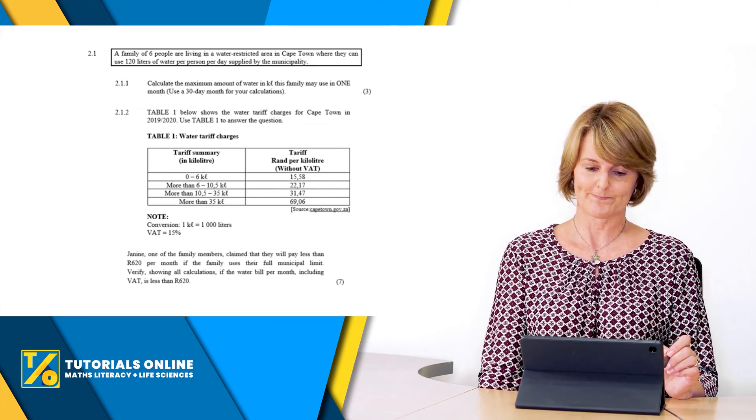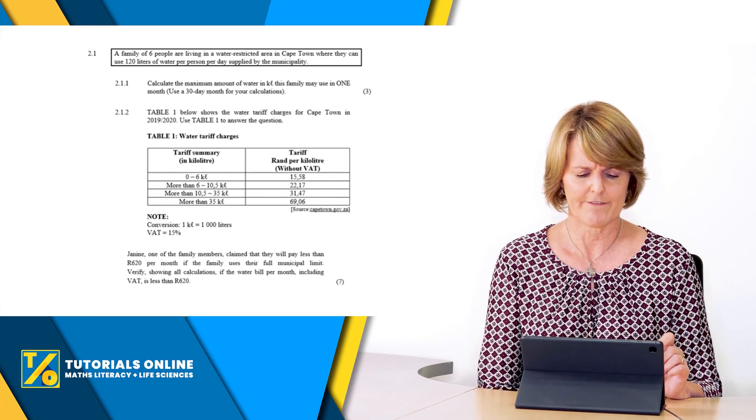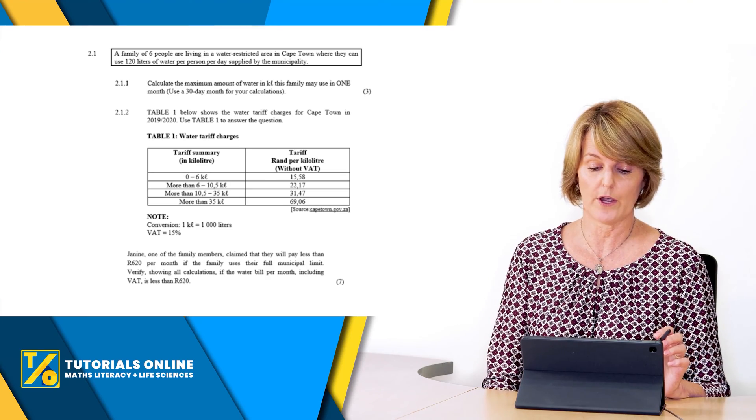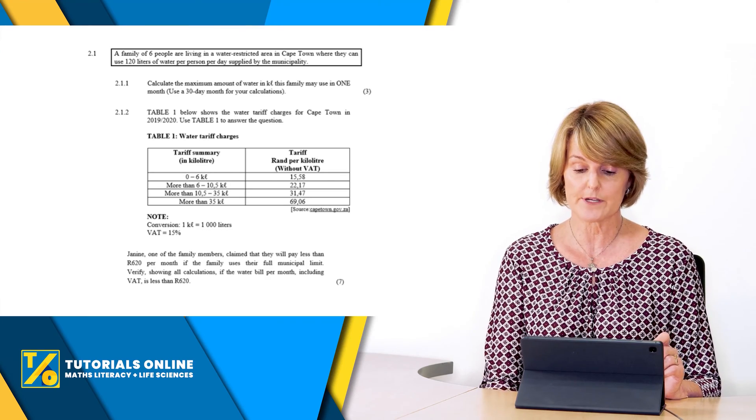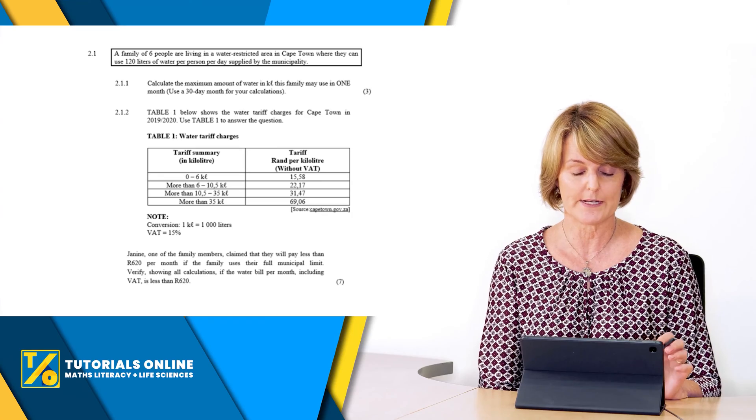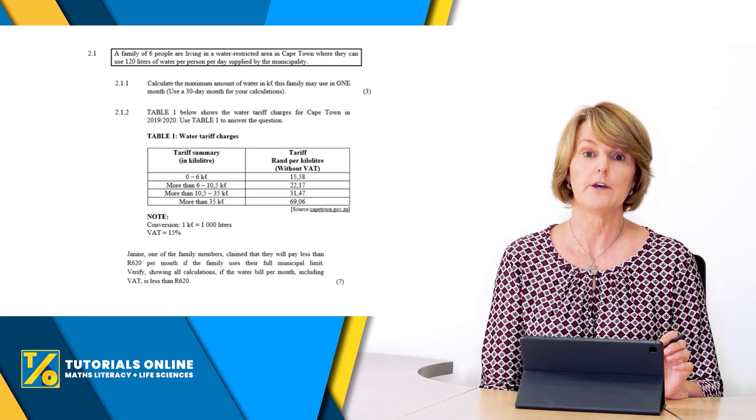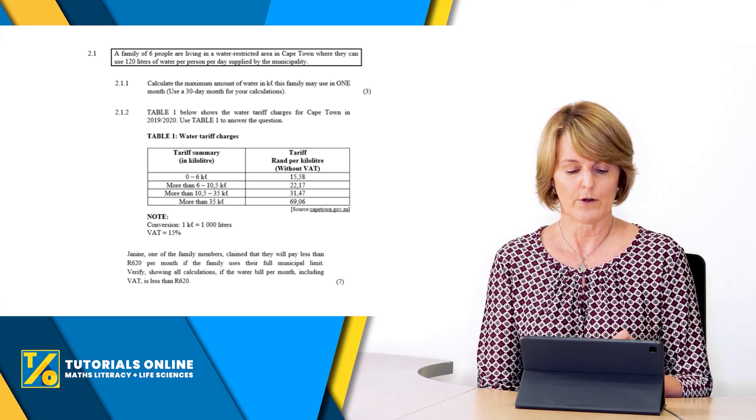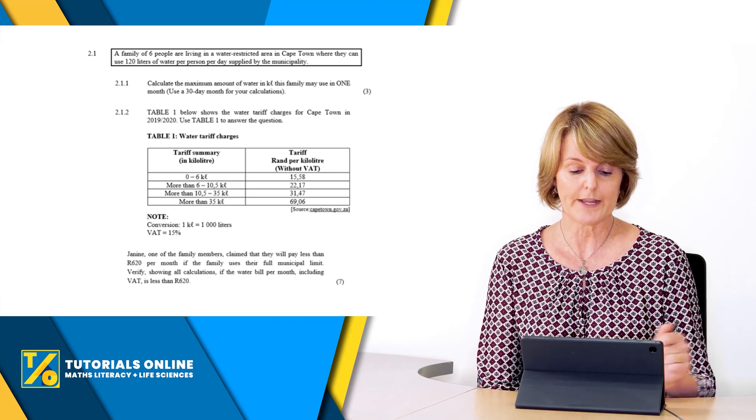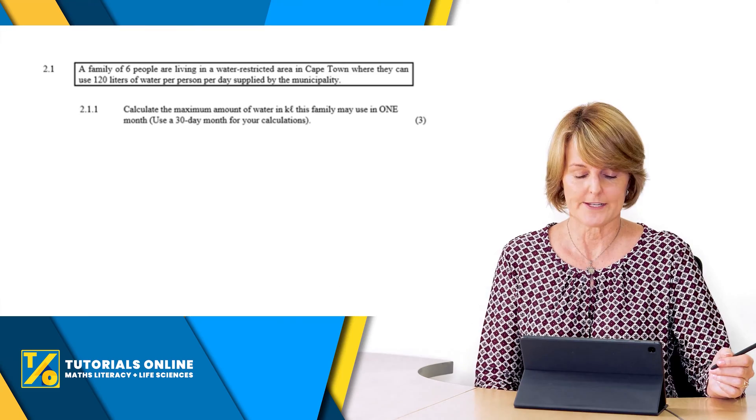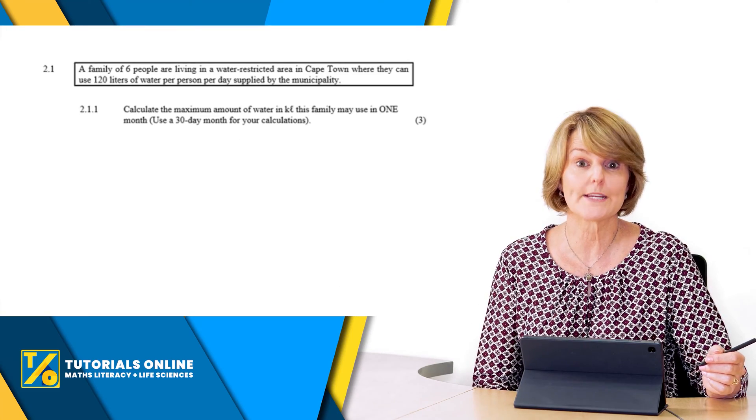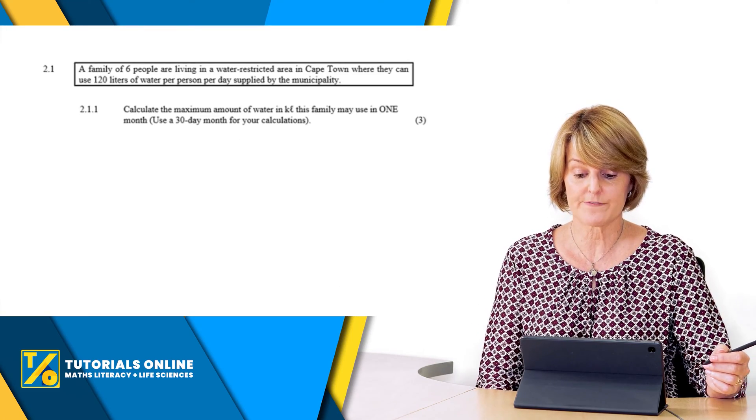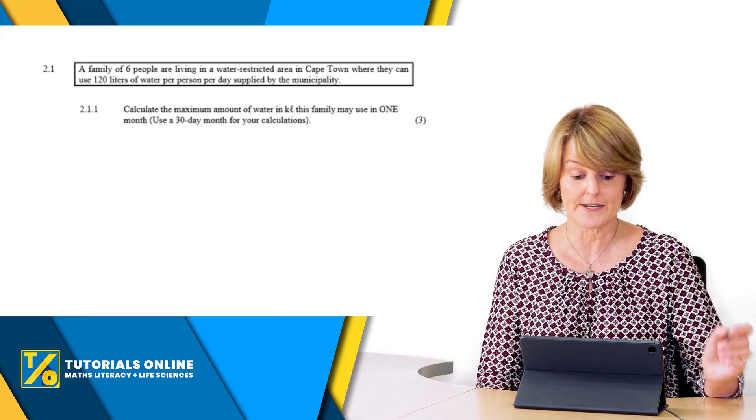Here is a question. It says a family of six people are living in a water restricted area in Cape Town where they can use 120 litres of water per person per day supplied by the municipality. There are two questions related to it, so on the next screen I'm just going to deal with 2.1.1.